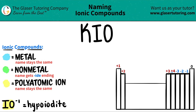IO⁻ is always a negative one charge, and that is always called hypoiodite. And I see it right here — here's IO, that's hypoiodite.